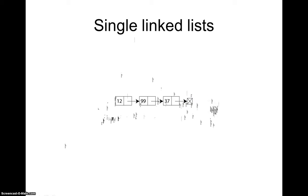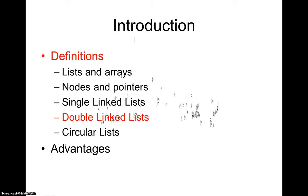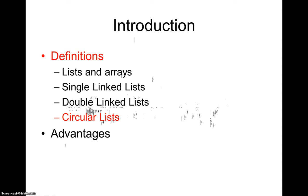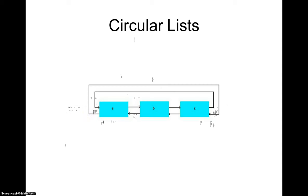In a doubly linked list, the node structure is slightly different — there are three parts: the data part, a left pointer, and a right pointer. The right pointer points to the next node and the left pointer points to the previous node. This allows you to traverse in the forward or reverse direction, hence the name doubly linked list.